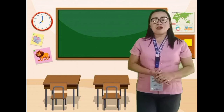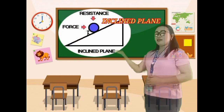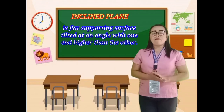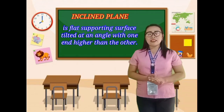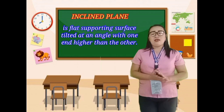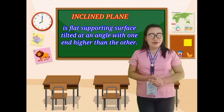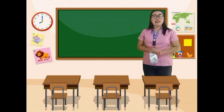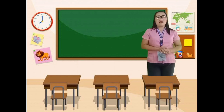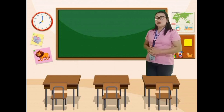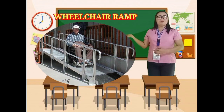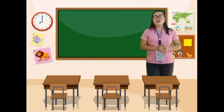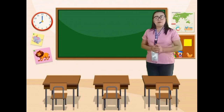The second type of simple machine is the inclined plane. The inclined plane is a flat supporting surface tilted at an angle, with one end higher than the other. It is used to move heavy loads over vertical obstacles. Examples of this are the wheelchair ramp, the stairs, and the ladder. Those are examples of the inclined plane.